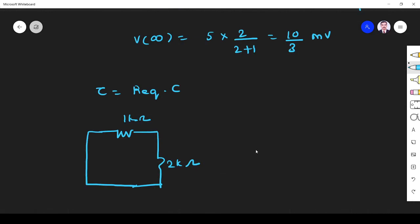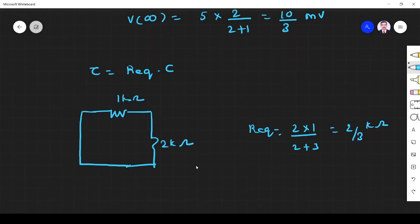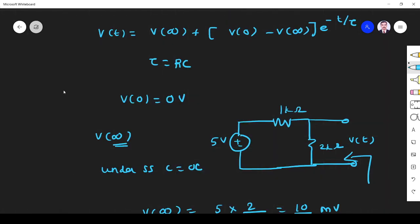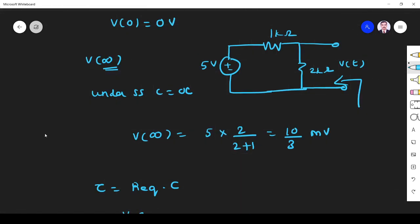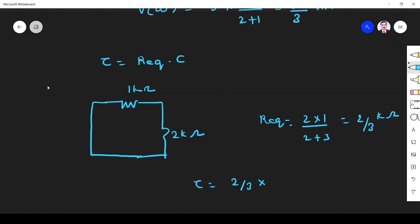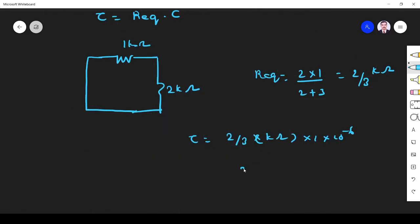So R_equivalent is, R_equivalent is equal to 2 into 1 divided by 2 plus 1 is 2 by 3 kilo ohm. Sorry kilo ohm, not ohm. So it is 2/3 kilo ohm. Okay. So it will be like this. So τ is equal to R_equivalent into C, 2 by 3, 2 by 3. C is what? What is the C value? C value is 1 microfarad. So 1 microfarad means it is kilo ohm into 1 into 10^(-6). So 2 by 3, so 2 by 3 millisecond.